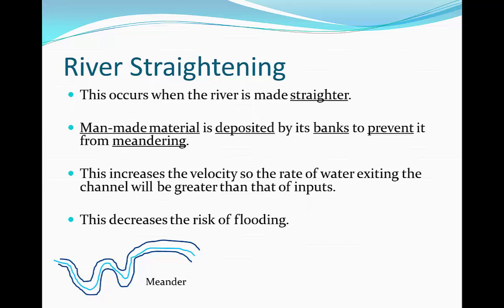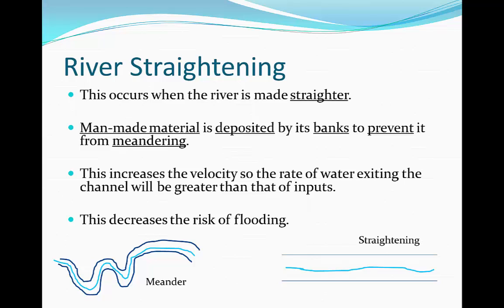Here we have a meandering river with flow going through it. If we change this to a completely straight river, there's going to be less water flowing through it because it will be exiting the channel at a greater rate — the river is faster.